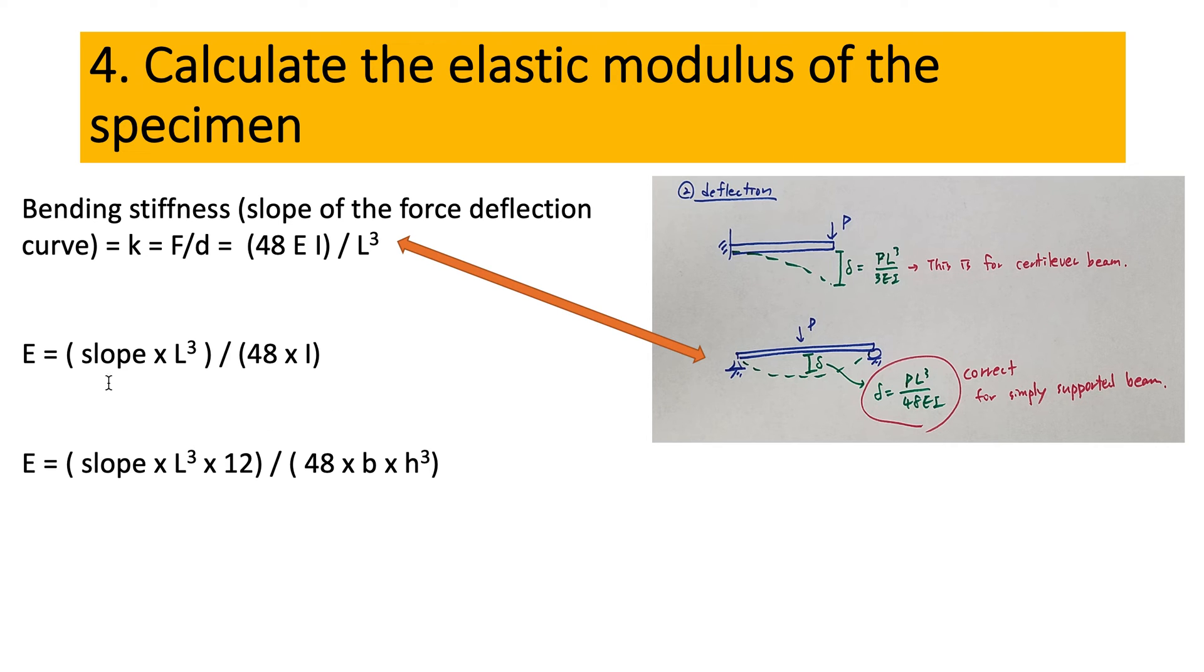So if you plug all of them here in I, you will get the elastic modulus as the slope multiplied by the length cubed multiplied by 12 divided by 48.